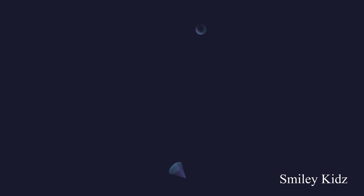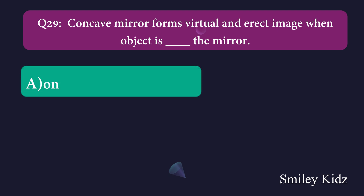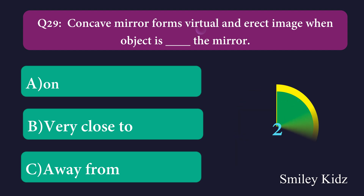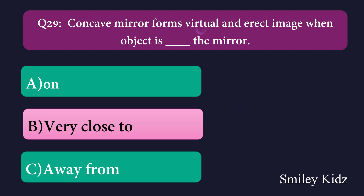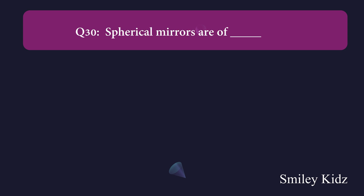Question number twenty-nine: Concave mirror forms a virtual and erect image when object is dash the mirror. Option A: on, Option B: very close to, Option C: away from. The right answer is very close to. Concave mirror forms a virtual and erect image when the object is very close to the mirror.